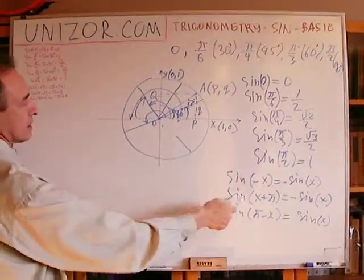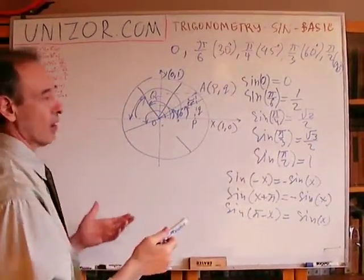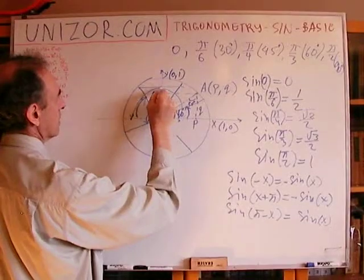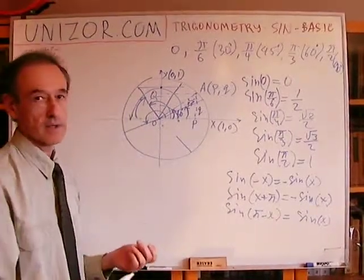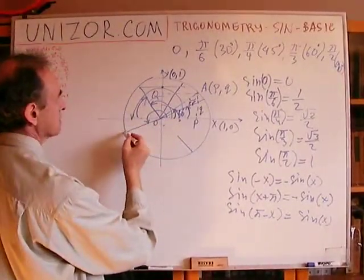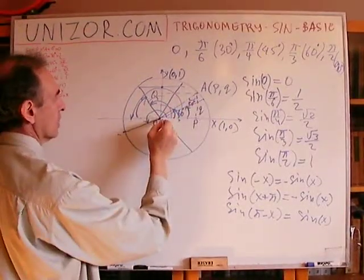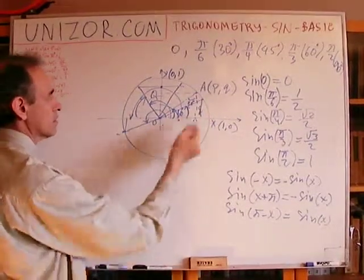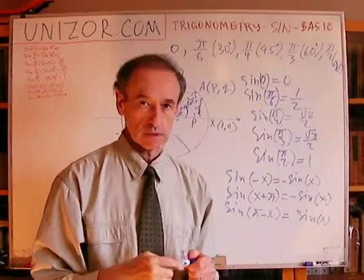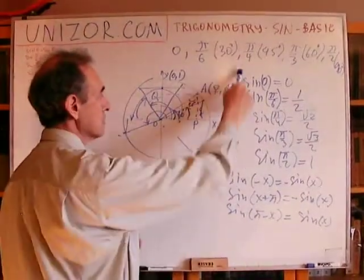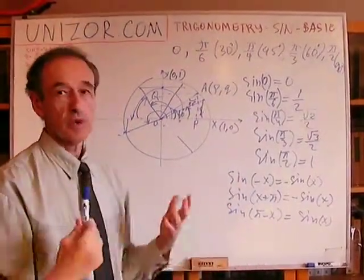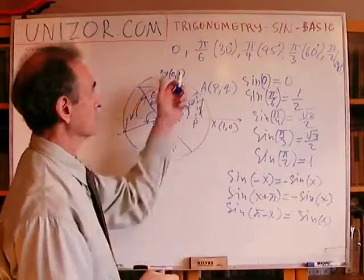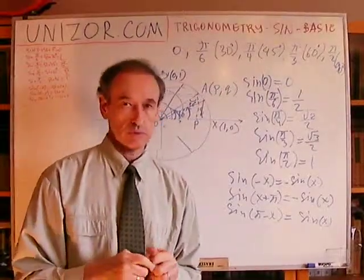Now, both cases are actually quite obvious from the geometry of this. Because if these two points are symmetrical, it means their ordinates are the same. Now, if this point is centrally symmetrical relative to zero, then it means, obviously, that the ordinates are equal in absolute value and opposite in sign. So using these properties, we can find out any sine angle for one of the major angles which we're discussing.